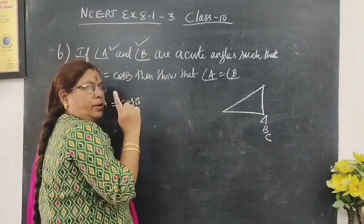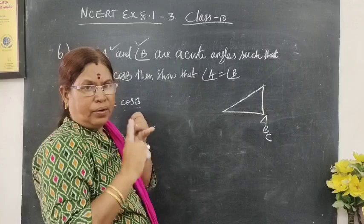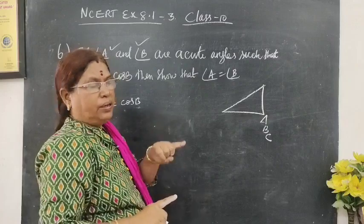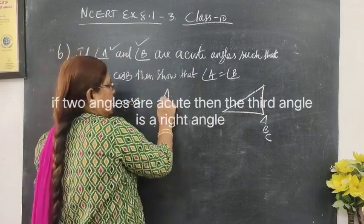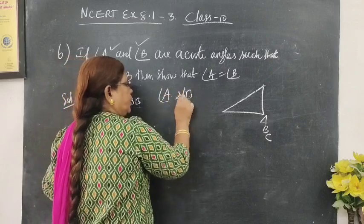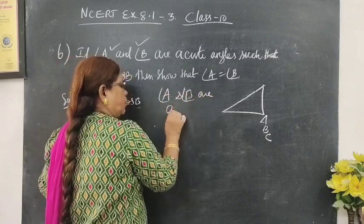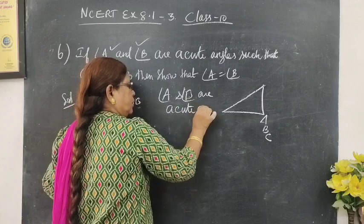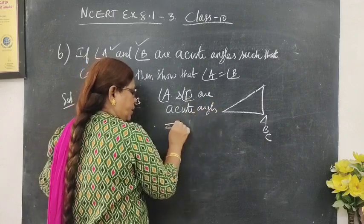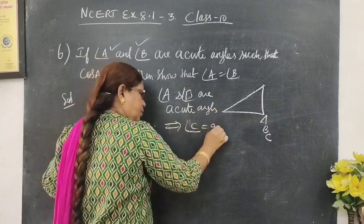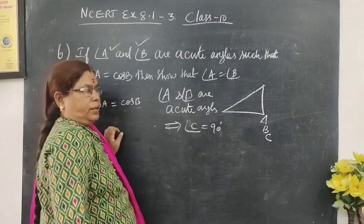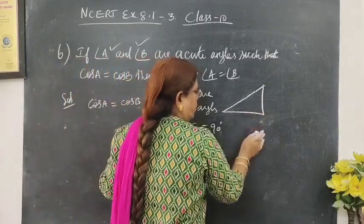Definitely one angle should be 90 degrees in a right angle triangle. If A and B are acute angles, then angle C must equal 90 degrees. So here you can mark angle C as 90 degrees.